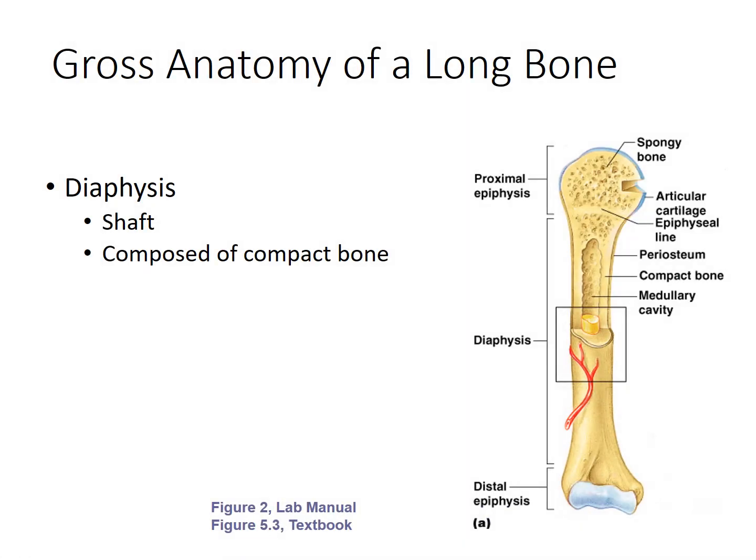You are responsible for learning the anatomy of the long bone, so let's take a moment to discuss that now. The long bone has two basic regions. The shaft or central portion is called the diaphysis, and it is composed mainly of compact bone. Let's take a closer look at this diaphysis.